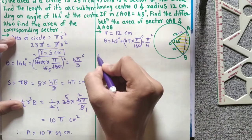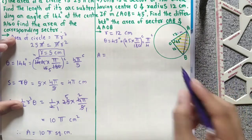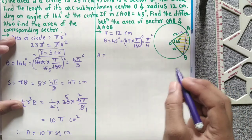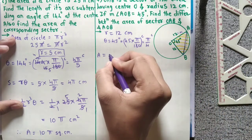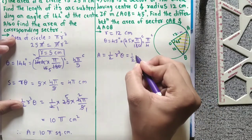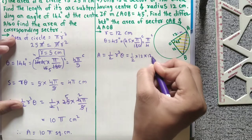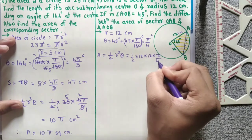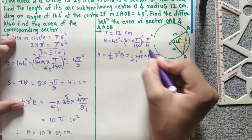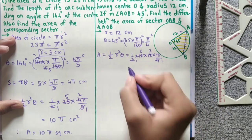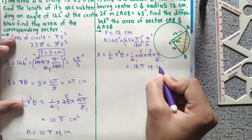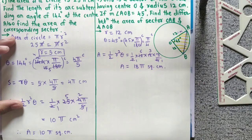We need to find area of sector OAB. Area of sector equals half r square theta: half times 12 times 12 times pi by 4. Two ones are 2, two sixes are 12, four ones are 4, four threes are 12. So area of sector equals 18 pi square cm.